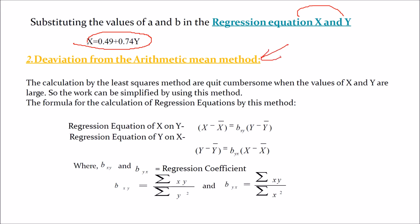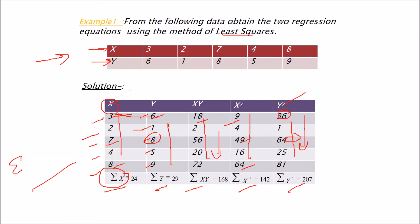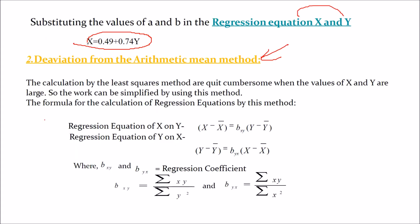Now we'll turn our attention to the deviation from the arithmetic mean method. So now, why this method? First of all, this question should come into your mind. See, as we have seen these values, these are quite simple values. But when the value will increase, this computation is quite heavy. X square, Y square, XY is quite heavy. So what we are going to do? We'll use the arithmetic method.